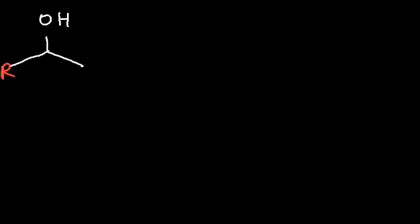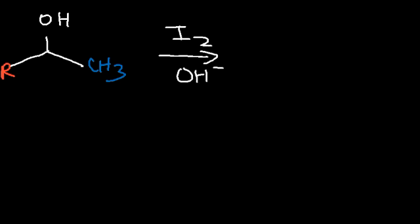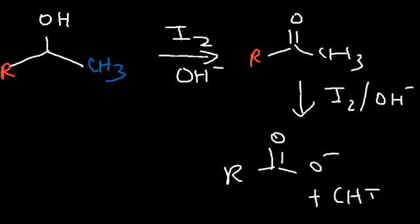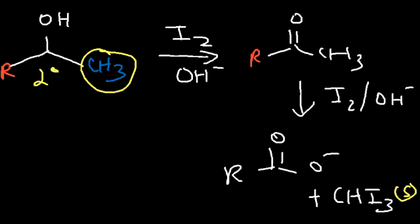Are there other functional groups that can give a positive iodoform test, or is it only methyl ketones? Anything that can become a methyl ketone under the iodine reagent can show a positive iodoform test. A good example is an alcohol. If an alcohol has a methyl group next to it, iodine is an oxidizing agent and can oxidize the secondary alcohol into a ketone — producing a methyl ketone. Since the solution still contains iodine and is still basic, this will eventually turn into a carboxylate ion and we'll also get iodoform. So a secondary alcohol that has a CH₃ group at the end can give a positive iodoform test.